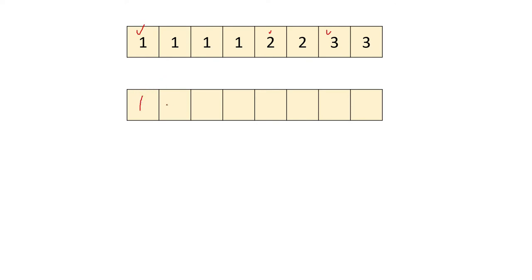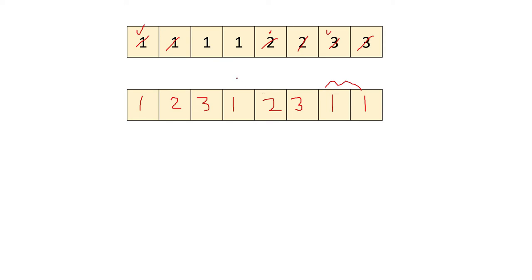Let's check. First we place 1,1,1,1 then 2 then 3 — so we try placing them in a round-robin fashion: one, two, three, one, two, three. Then we have one remaining 1 with no other choice, but they end up adjacent. So this grouping methodology will not work.